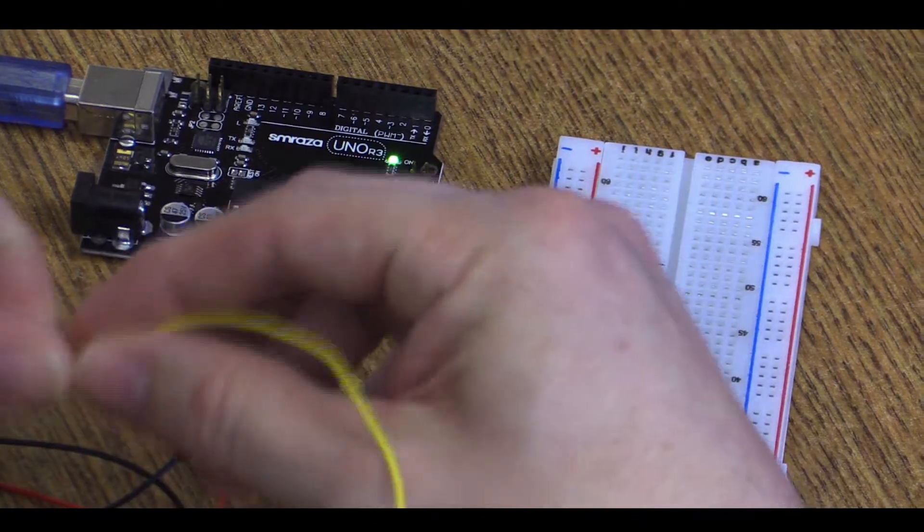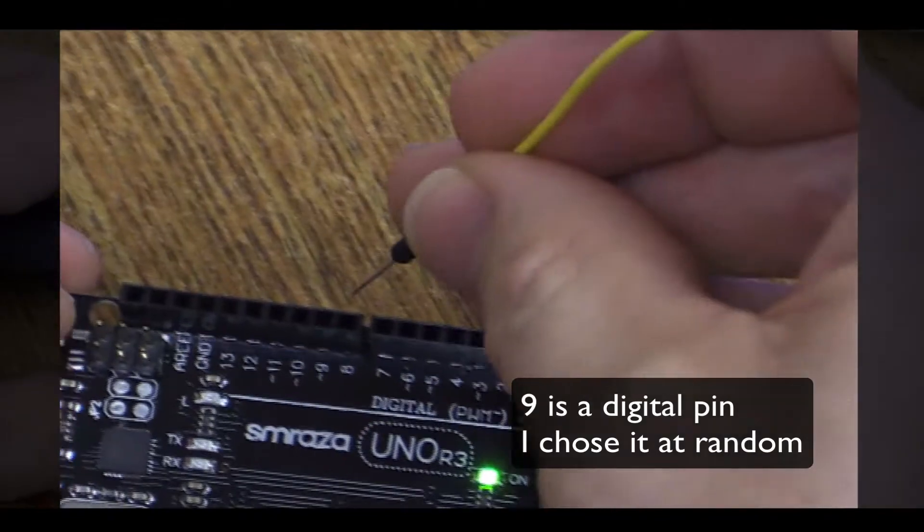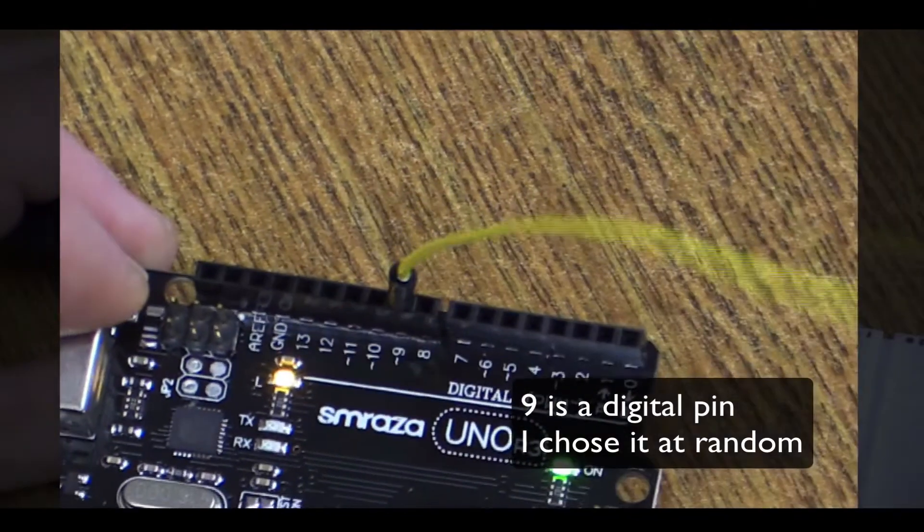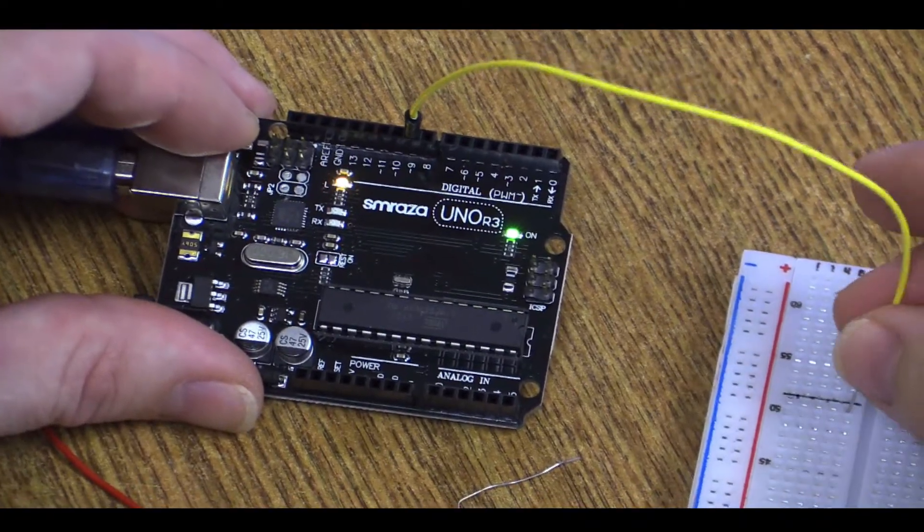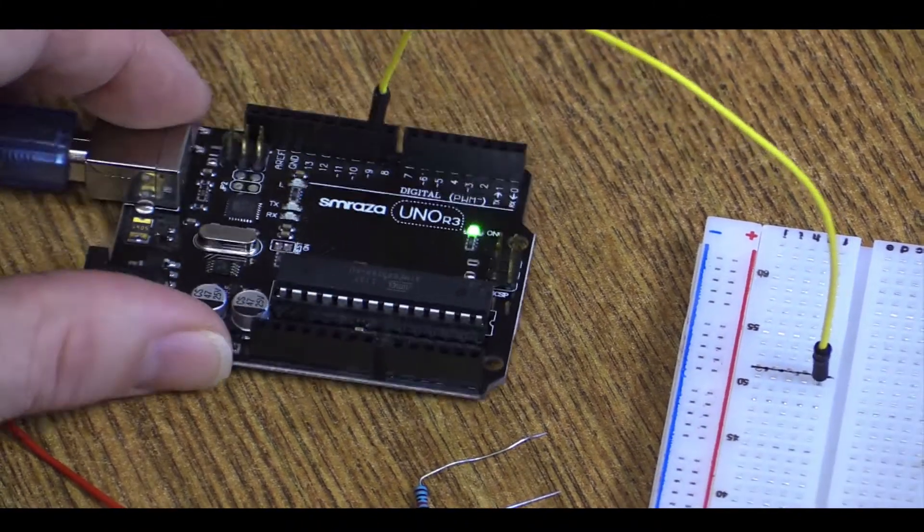The first thing we're going to do is take this cable. We're going to pick, let's say, number 9 here on the board. We're going to plug that into number 9, and we're going to go over to our handy-dandy line on our board. Now number 9 is connected to that line on the board.